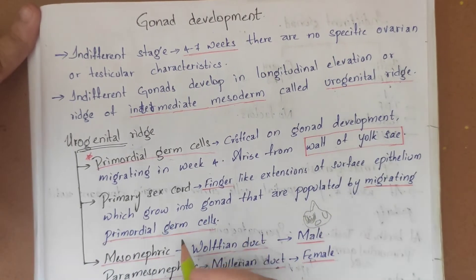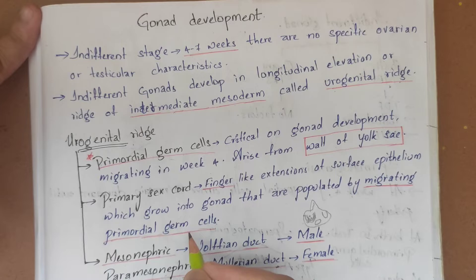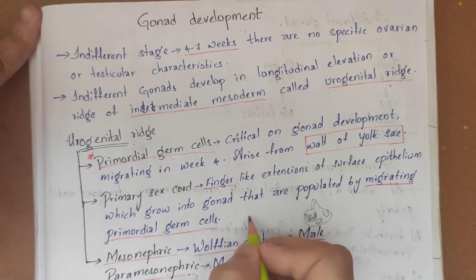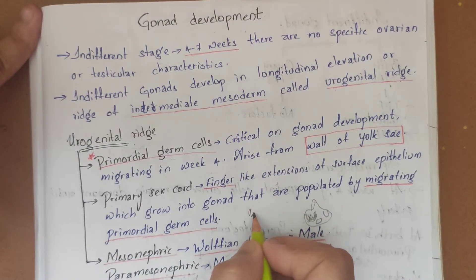These sex cords are populated by migrating primordial germ cells. Actually, these sex cords are surface epithelium which are present in this way, and on these there are primordial germ cells.